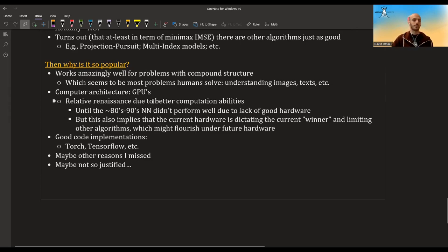Another reason is computer architecture, computer hardware, and especially GPUs. From what I understand, until the 80s and 90s, neural networks were not so popular, and they did not perform so well, partially due to lack of good hardware, maybe also lack of research. But then with GPUs, it accelerated the popularity of neural networks. This also kind of implies that neural networks are the winner, or the rockstar now, due to hardware limitations. So maybe with different hardware, future hardware, other algorithms might be the winner. Just something to think about.